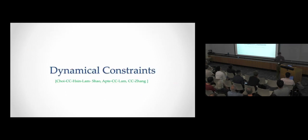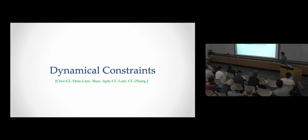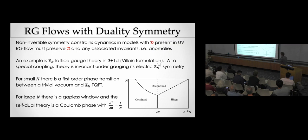That was the lightning overview of some developments about non-invertible symmetry in recent years. Now I want to situate the question about anomalies in a broader point of view and talk about some dynamical constraints. These are symmetries just like ordinary symmetries; they have a richer algebraic structure, but we still want to use them to constrain dynamics.